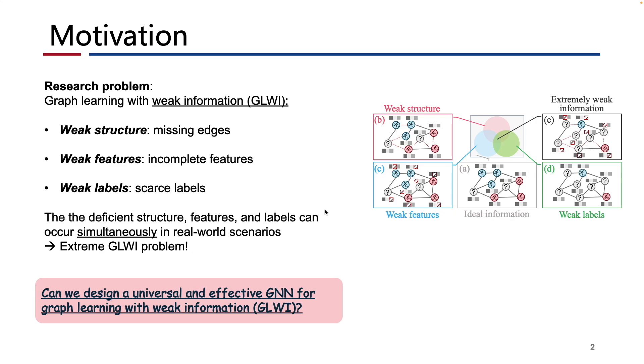We consider the graph learning problem with weak structure, weak features, weak labels, and an extreme scenario where all data elements are deficient. Our target is to design an efficient GNN to address the GLWI problem.